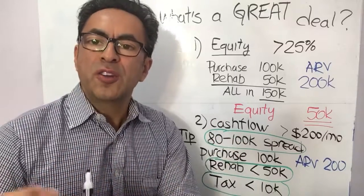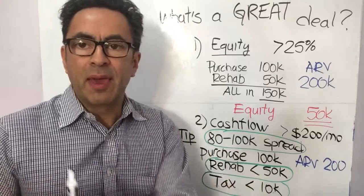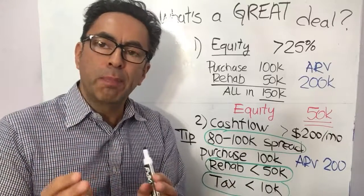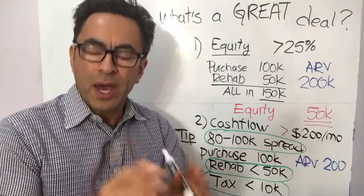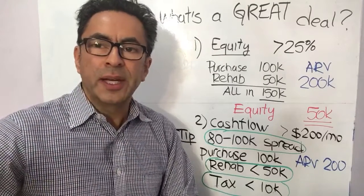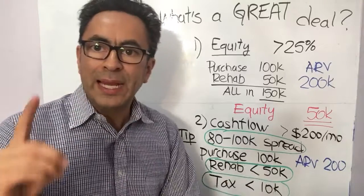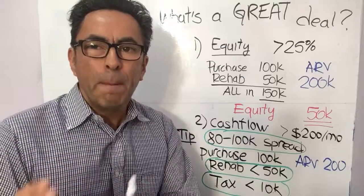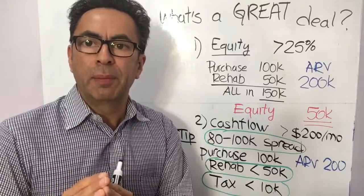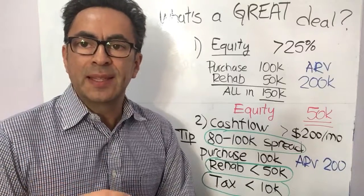at least eighty to a hundred thousand dollars between the purchase price and the ARV. Example: if you buy the property for a hundred thousand dollars, it should appraise for at least 180 to two hundred thousand. And the rehab should be less than fifty thousand, meaning a medium rehab. And finally, taxes should be less than ten thousand.